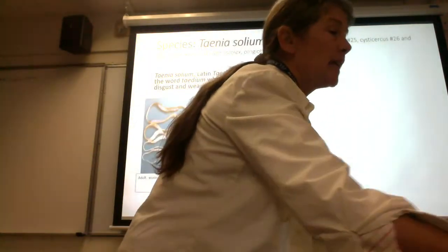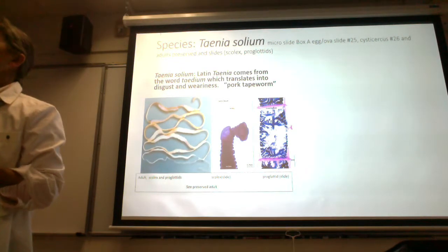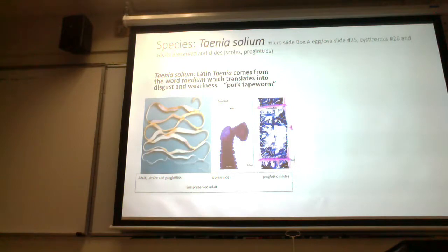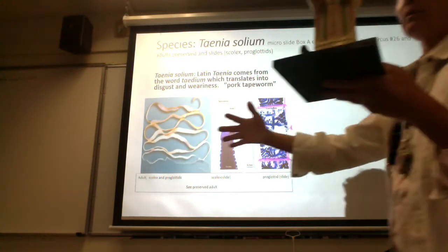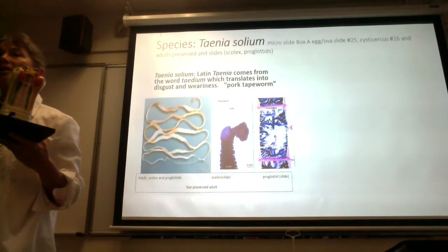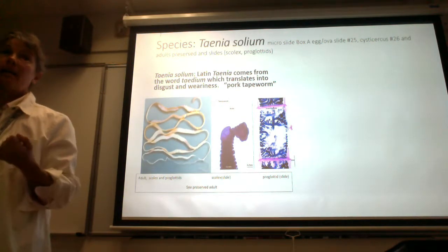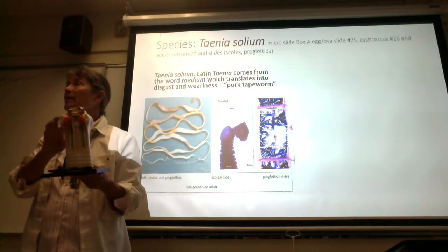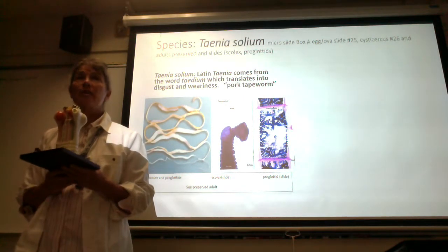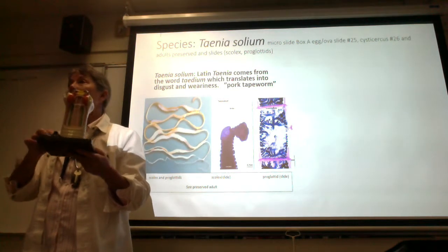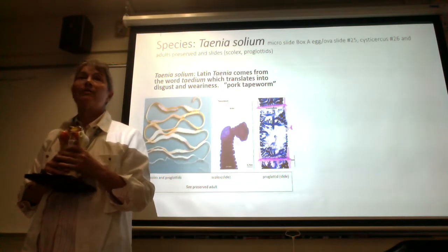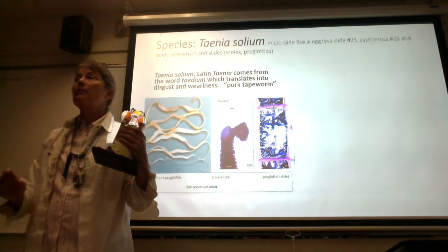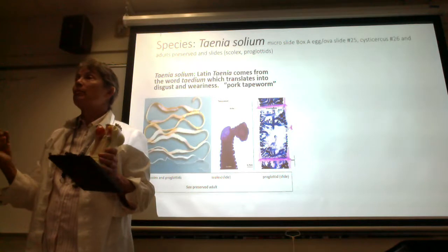We're going to start out with Taenia solium. The head is called the scolex, and on the scolex there are hooks and suckers that the adults use to attach to the inside of our intestine. That's where the adults are going to grow. As they grow, they form little segments called proglottids. The function of the proglottids is to form hundreds and thousands of eggs. As a tapeworm grows, the proglottids at the very end are going to be chock full of mature eggs. The proglottid will break off and be passed in the feces, and when it dries up, it breaks open, releasing the eggs.